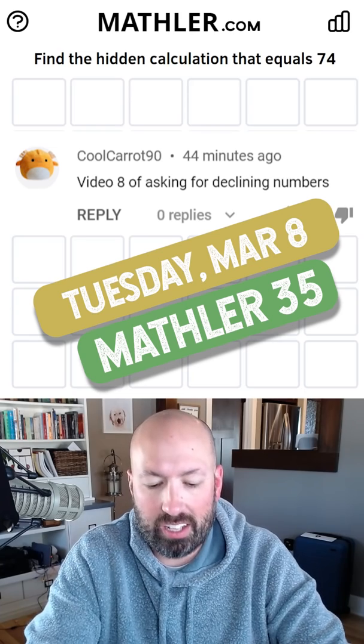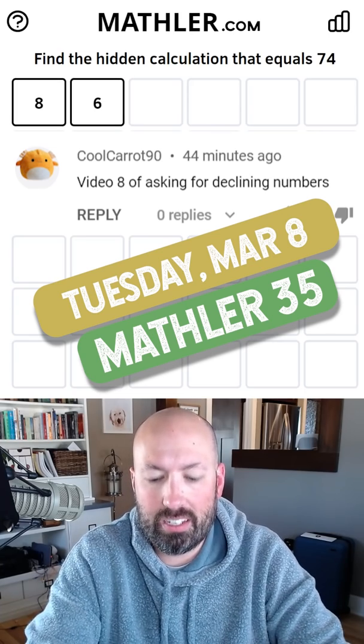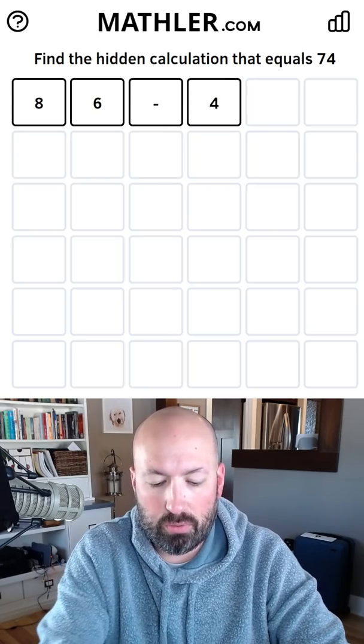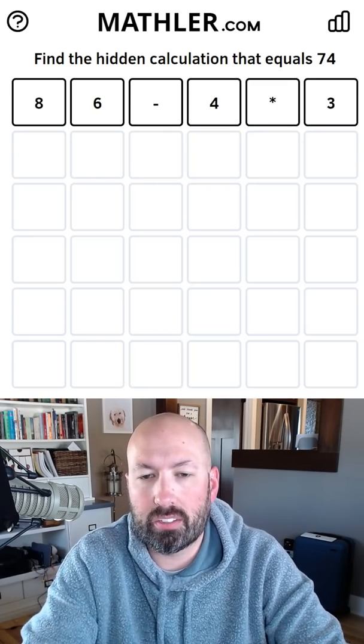All right, so somebody suggested that I should do declining numbers, so I'm going to start with 86 minus 4 times 3. That's 86 minus 12 gets a 74.